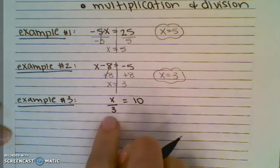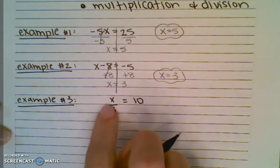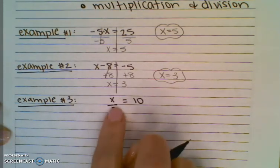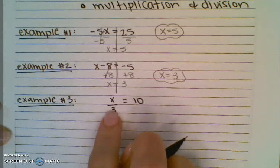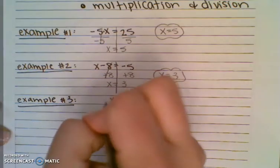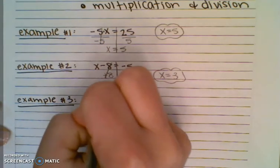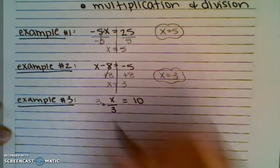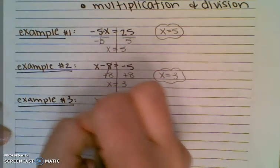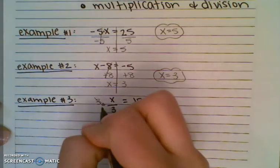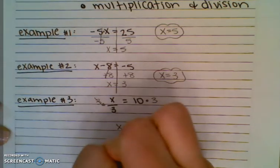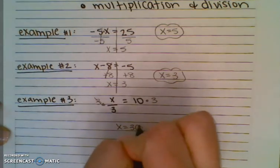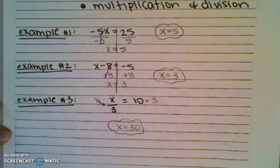Last but not least, there's division — x divided by 3. That fraction bar means division. The opposite of division is multiplication, so times 3. That's going to get rid of that. But if I multiply by 3 on the left, I have to also multiply by 3 on the right. So x equals 30 is my final answer. Those are one-step equations.